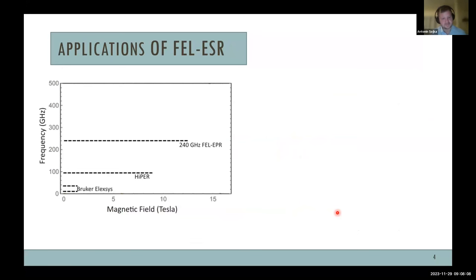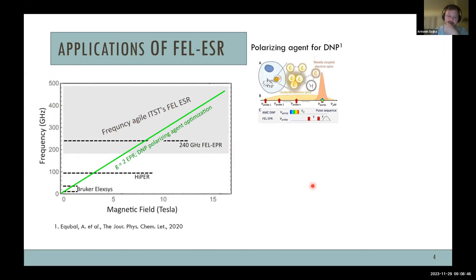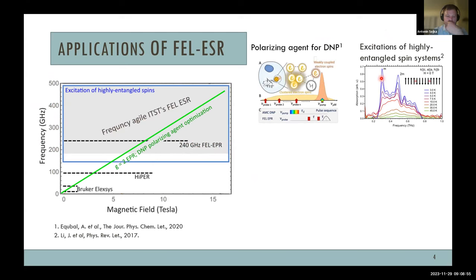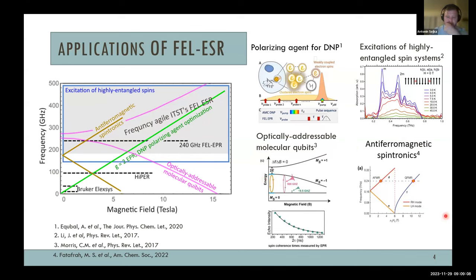I place a graph of frequency versus magnetic field to show the phenomena we're interested in. You can see well-known spectrometers like Bruker HyperEPR, which mostly operate under 100 GHz. In recent decades, more spectrometers go above 100 GHz. Our new spectrometer should cover a much broader frequency range — up to 500 GHz at 16 Tesla — giving access to short relaxation studies, dynamic nuclear polarization, highly entangled spin systems, optically addressable molecular qubits where zero-field splitting is large, and antiferromagnets in spintronics.